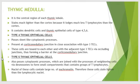The thymic medulla is the central region of each thymic lobule. It stains much lighter than the cortex because it contains far fewer T lymphocytes compared to the cortex. The medulla contains dendritic cells and thymic epithelial cells of types 4, 5, and 6.